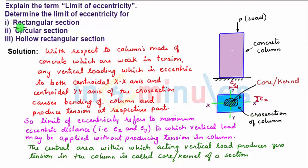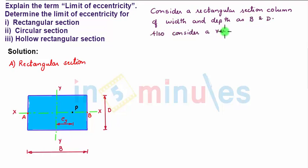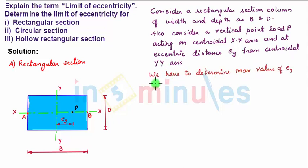First, let us take a rectangular section. Consider a rectangular section column of dimension width and depth as B and D. Also consider a vertical point load P acting on centroidal x-axis and at eccentric distance ey from centroidal y-axis. For this section we have to determine maximum value of ey to produce zero tension in the column.